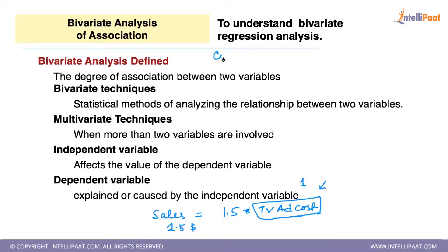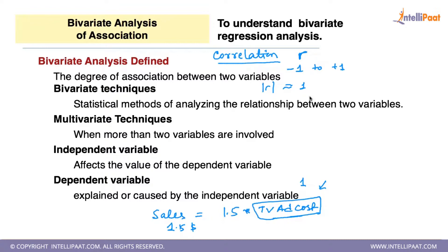Now we have talked about correlation. The measure of correlation coefficient is r, and r lies between minus 1 and plus 1. The closer the absolute value of r is to 1, the stronger the relationship. Since correlation involves two variables, it is also a bivariate technique.